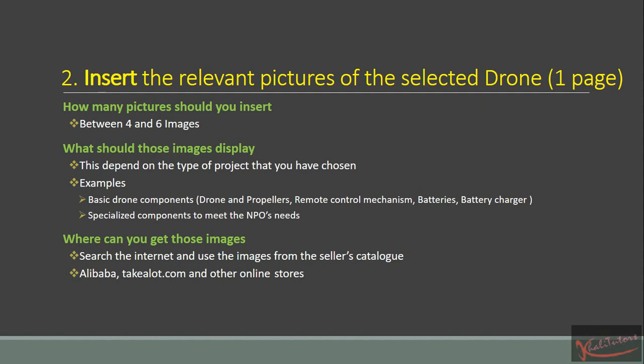You'll get that information from the journal or textbook that you will have read. Take the name of the drone and the model number, go to the internet, search for that, find the supplier, and from the supplier's catalog, that's where you're going to get all the images. Some websites where you can get drones include Alibaba and takealot.com. When it comes to takealot.com, most of the drones there are not heavy-duty drones — they are the smaller ones — but most of them do a good job, for example if your main focus is taking aerial images to address a particular need for a particular village.